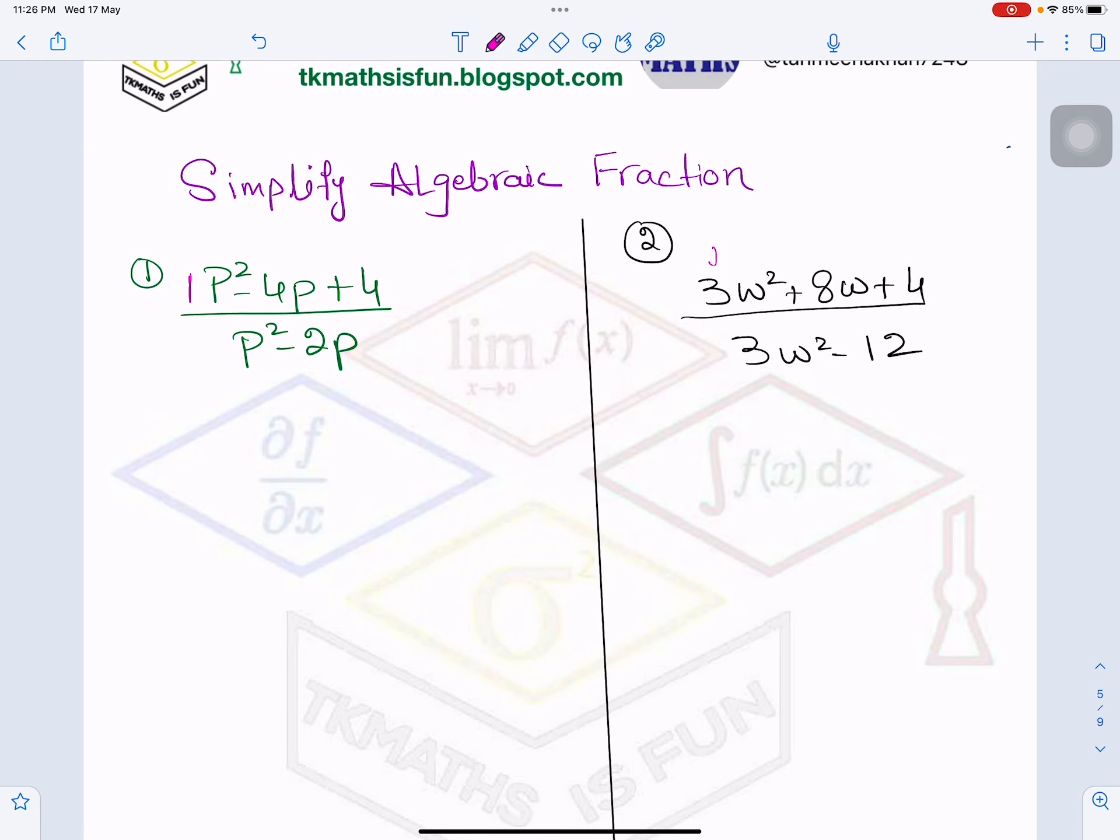How to simplify algebraic fraction? I will factorize numerator and denominator, and then I will see if I can cancel out few terms. So technique I told you last time, I am talking about numerator first of all.